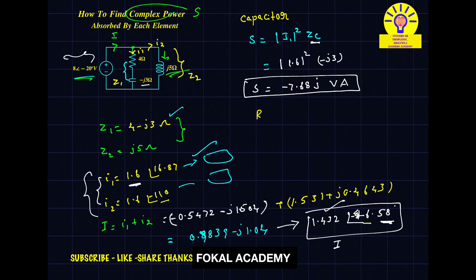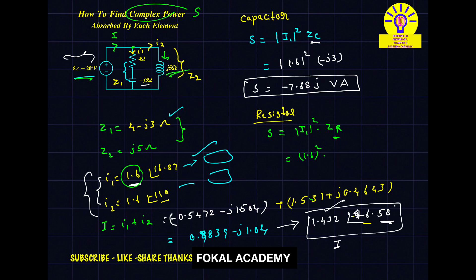For the resistor, the same formula applies: complex power S equals magnitude of I1 squared into Zr. The current through the resistor is also I1, with magnitude 1.6. So 1.6 squared into Zr, where Zr equals 4 ohms. This gives 2.56 into 4 equals 10.24 volt-ampere. This is the complex power for the resistor.